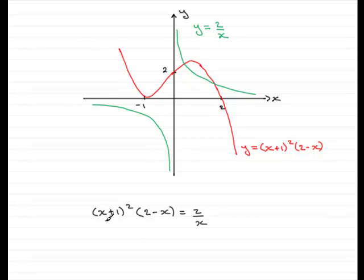You'll notice that from the previous part, we've got that the red graph was y equals x plus 1 all squared multiplied by 2 minus x, which is this part of the equation, and we've got the graph of y equals 2 over x over here.